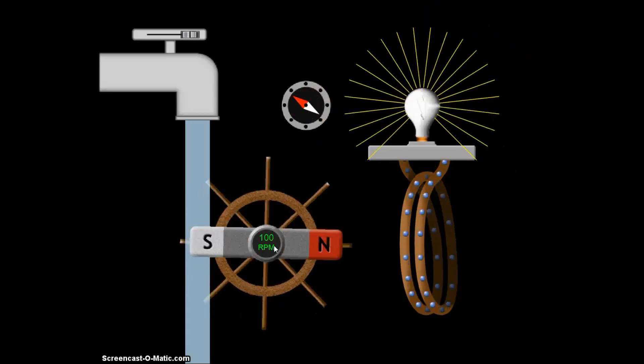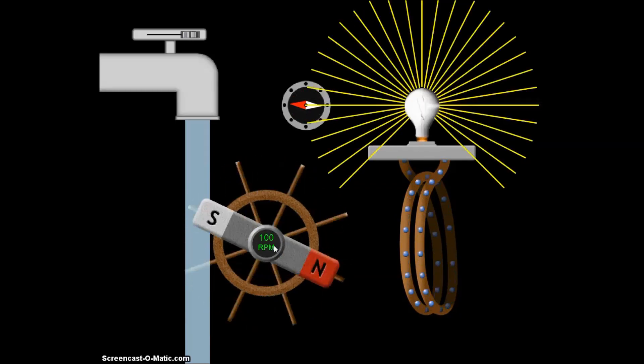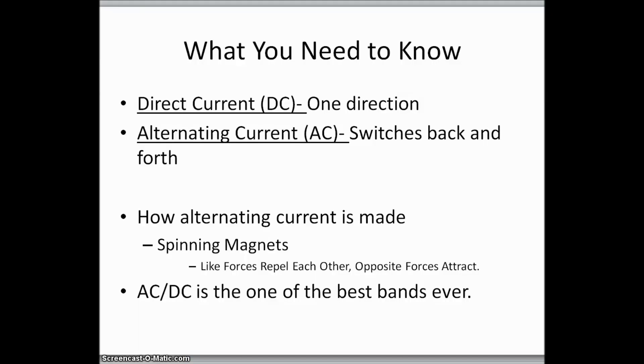Just something to think about with how electricity is made and brought from a power company into your house so you can cook your hot pocket. Okay, this is what you're going to need to know from today's talk and video. Direct current, DC, one direction. Alternating current, AC, switches back and forth. Those are the simple ideas that we've gone over today. You're also going to need to know how alternating current is made with that spinning magnet and knowing that like forces repel each other and opposite forces attract. And the last thing everybody needs to know is ACDC is one of the best bands ever.